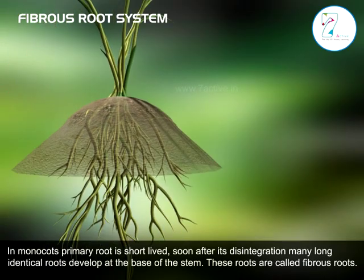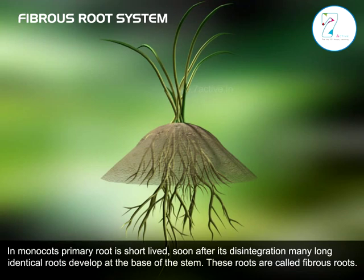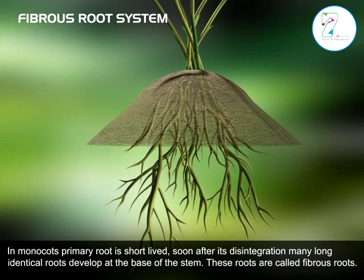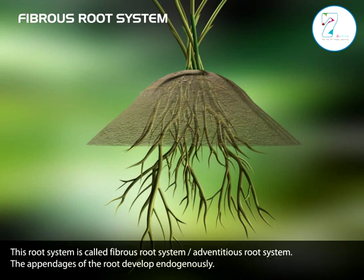In monocots, the primary root is short-lived. Soon after its disintegration, many long identical roots develop at the base of the stem. These roots are called fibrous roots. This root system is called fibrous root system or adventitious root system. The appendages of the root develop endogenously.